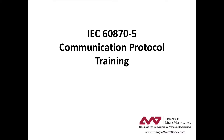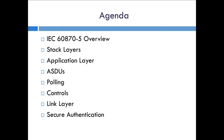Welcome to the Triangle Microworks IEC 60870-5 communication protocol training videos. This is the third video in the series. In the first video we gave an overview of IEC 60870-5 and talked about stack layers and a little bit about the application layer. In the second video we dug into details about the ASDUs, and in this third video we're going to talk more about the application layer, including polling and controls.